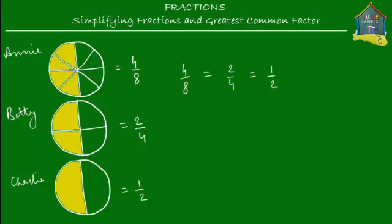If you can't see that yet, I'll erase the lines that slice the pizza. Now it's quite obvious that these shares are really equal — these yellow shaded parts are really equal. So 4/8 is really equal to 2/4, which is equal to 1/2 or one half. And that's why these fractions, which are really equal to each other, are called equivalent fractions. Although they look different, the value is really the same.